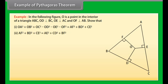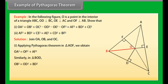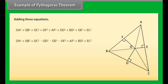Solution: Join OA, OB, and OC. Applying Pythagoras theorem in triangle AOF: OA² equals OF² plus AF². In triangle BOD: OB² equals OD² plus BD². In triangle COE: OC² equals OE² plus EC². Adding these equations gives OA² plus OB² plus OC² minus OD² minus OE² minus OF² equals AF² plus BD² plus CE².